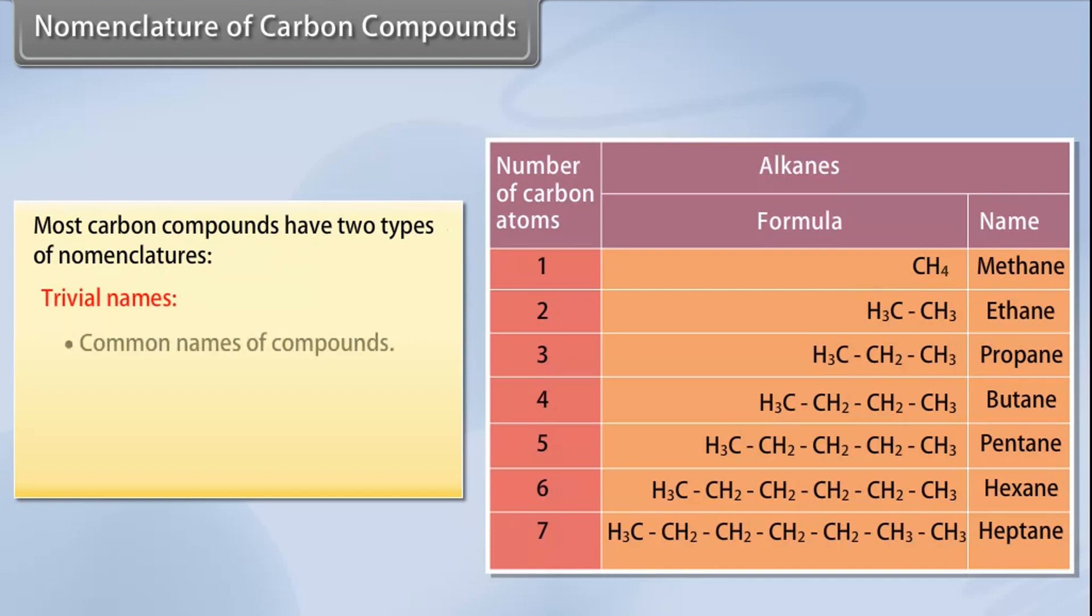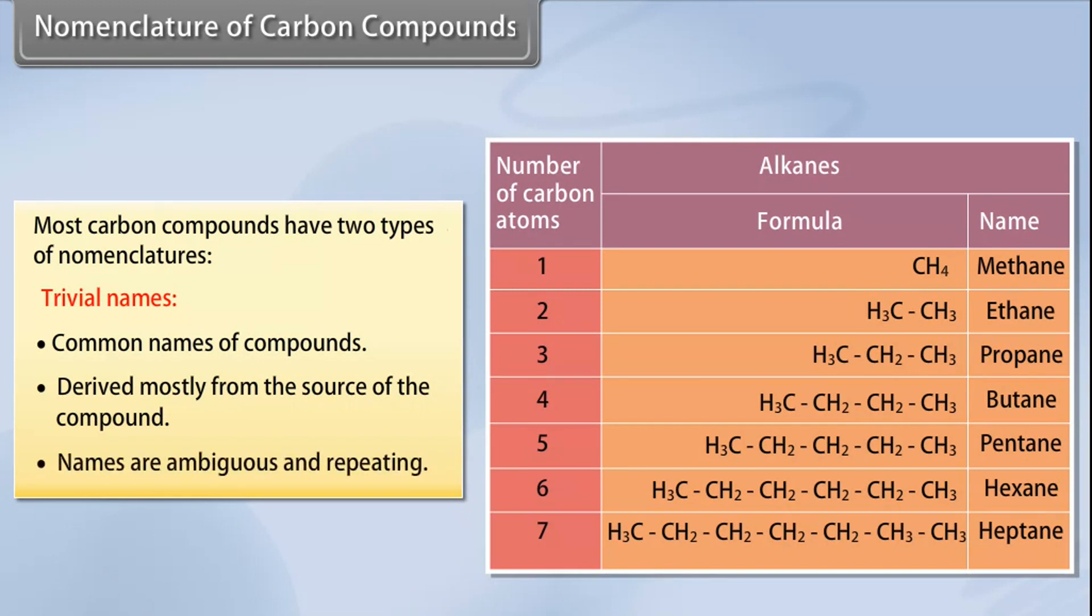Trivial names: Trivial names are the commonly used names of carbon compounds. These are derived mostly from the source of the compound. However, names formed using this manner are ambiguous and repeating.